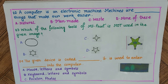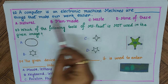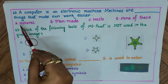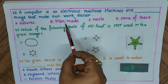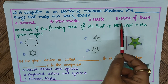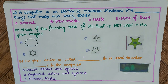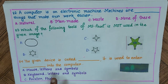Question 82: A computer is an electronic device. Machines are things that make our work easier. Machines are — A) natural, B) man-made, C) waste, D) none of these. The answer is B) man-made.